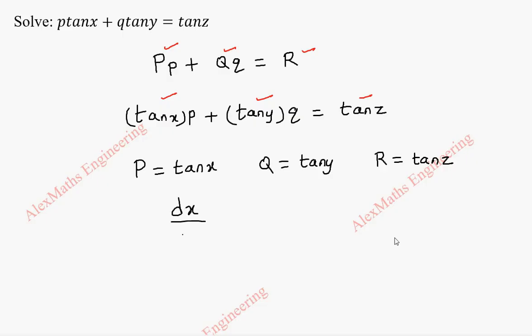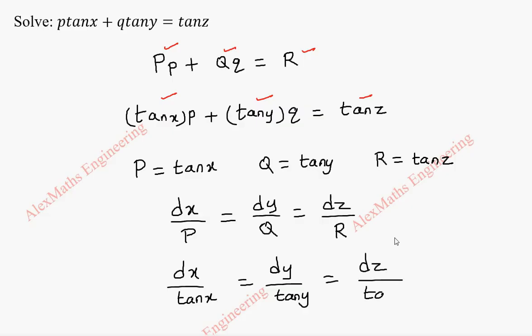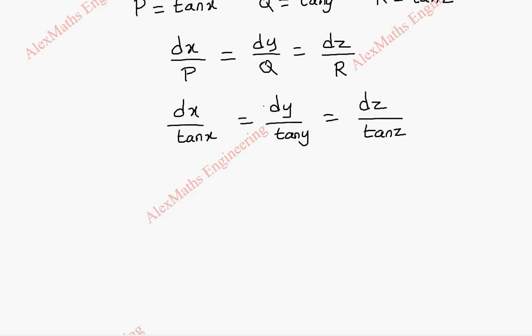So, to get the solution, we have to solve this equation dx by P equal to dy by Q equal to dz by R. Now this is dx by tan x, dy by tan y, and this is dz by tan z.